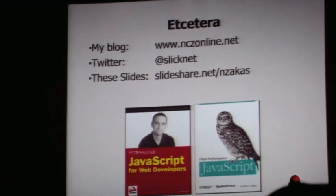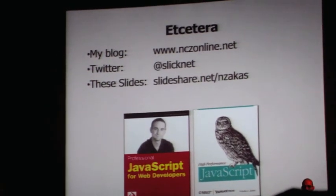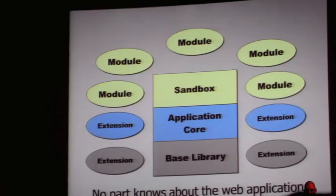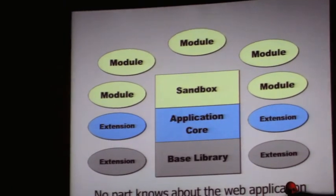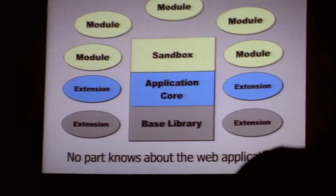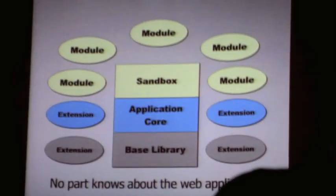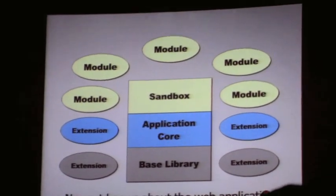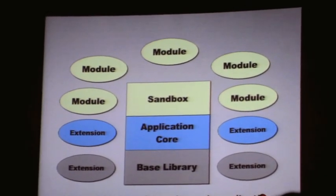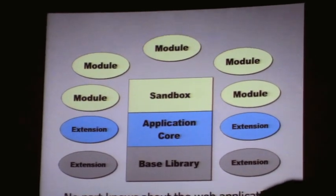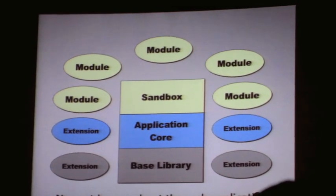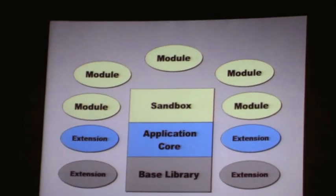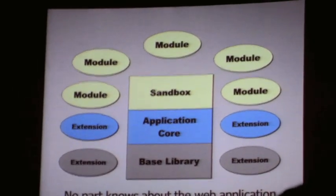Final question: In your diagram with modules around the sandbox and extensions around the application core, where does the piece fit that ties it all together into the web application? Answer: It's how the modules interact with one another that creates the web application. You output each of the modules onto the page and at the bottom just have the application core start them all. By virtue of them all starting and each module doing its correct job, that's what creates the web application itself. Thank you very much.